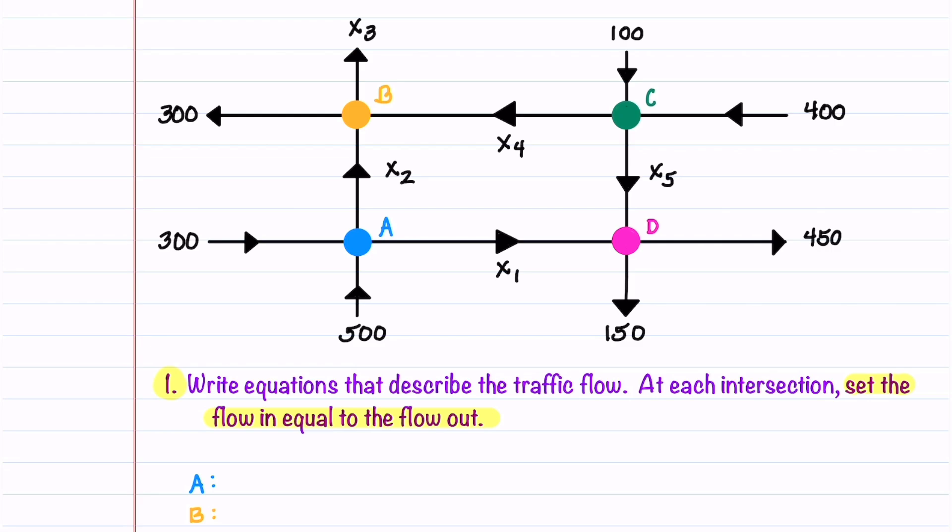We have from the left 300 cars going in and from the bottom 500 cars going in. That's going to equal the cars going out, x1 to the right and x2 up above.